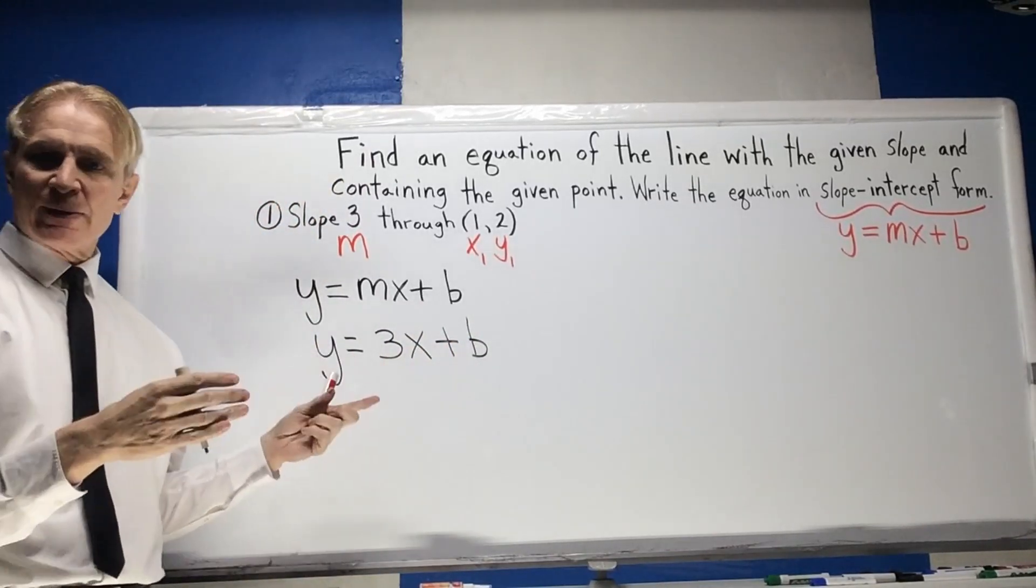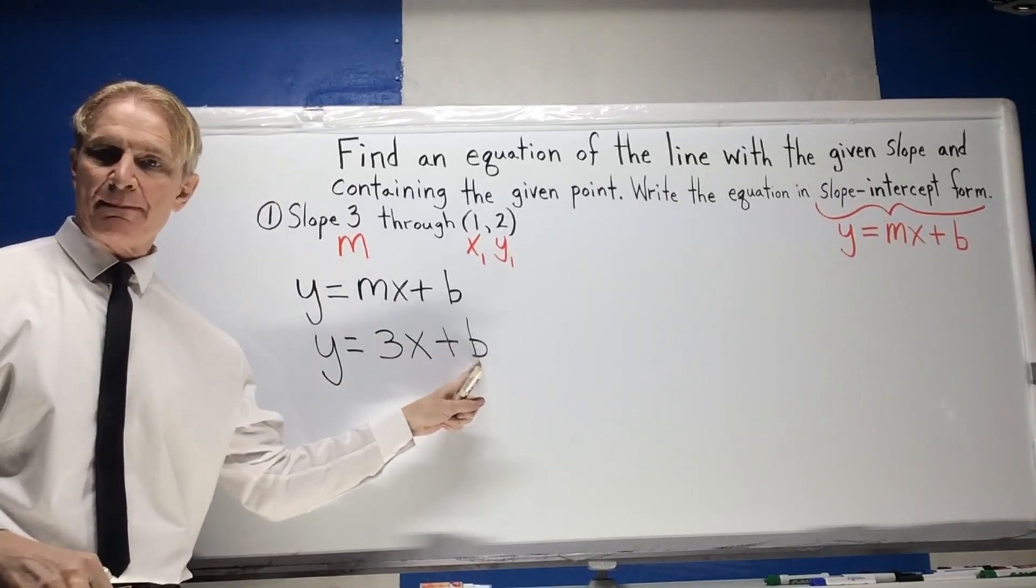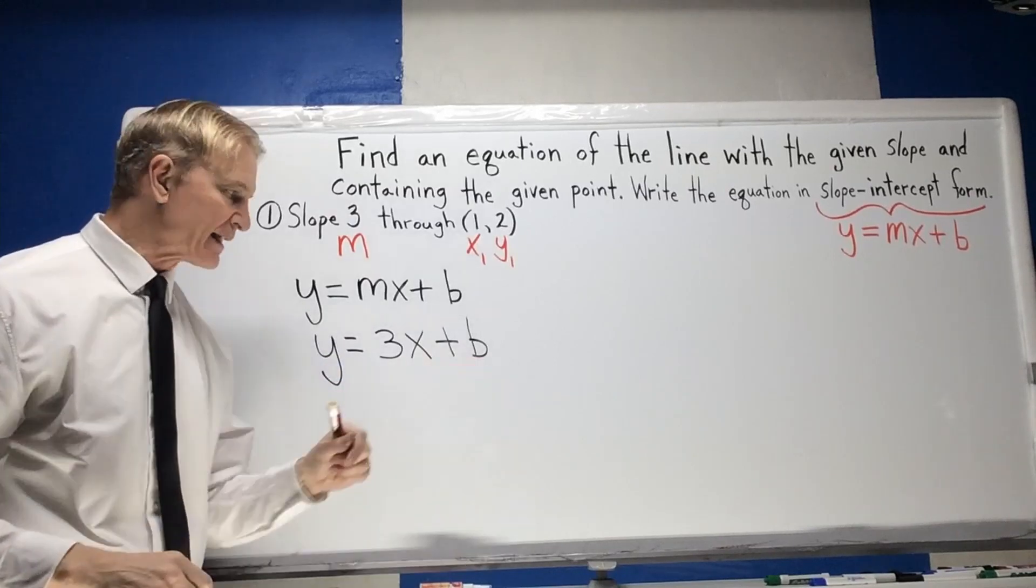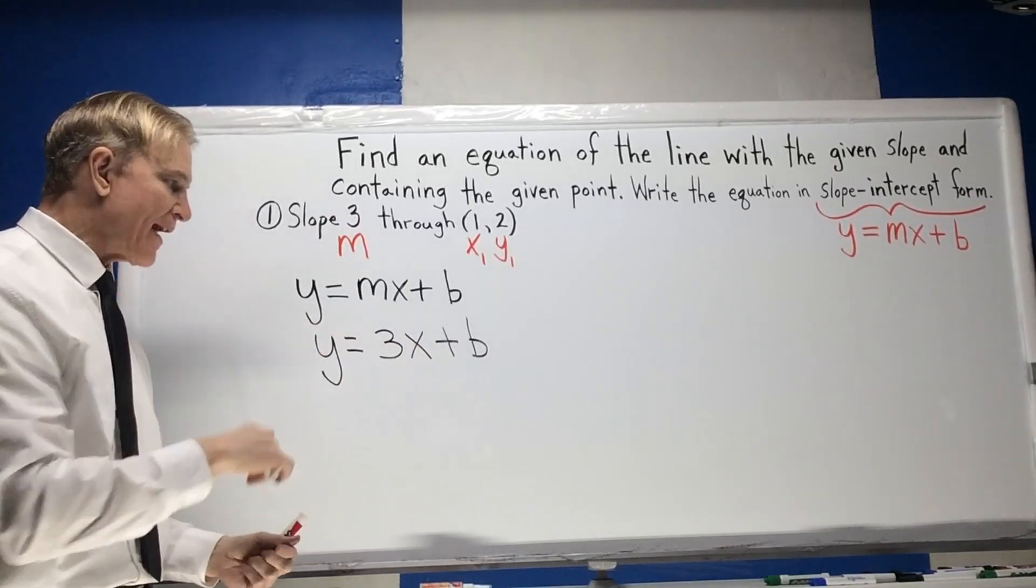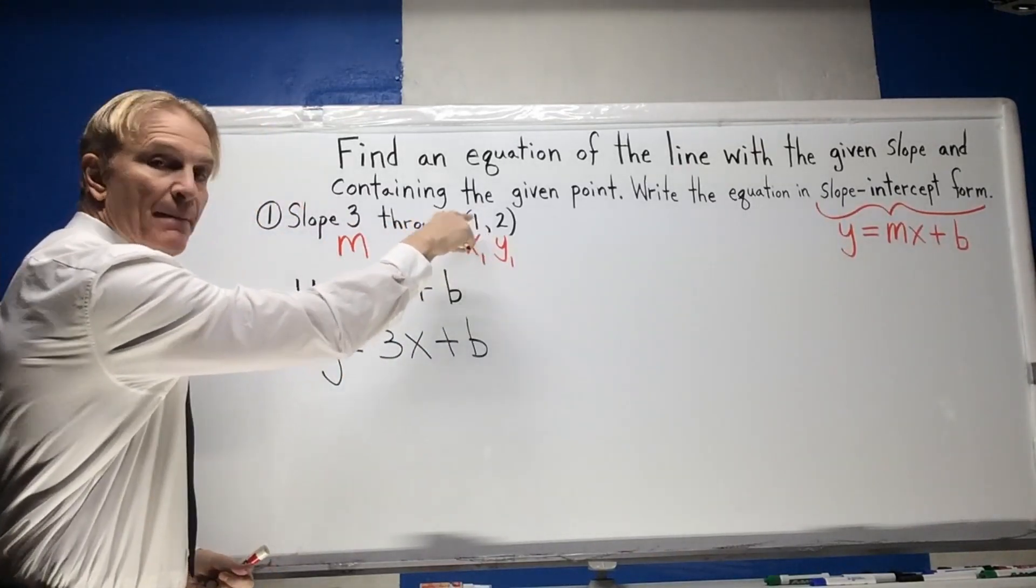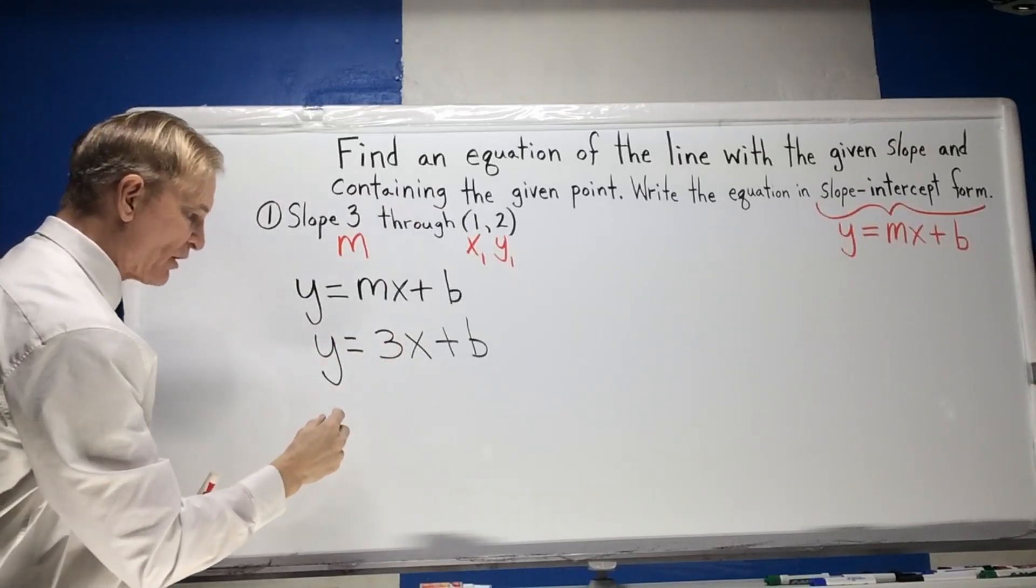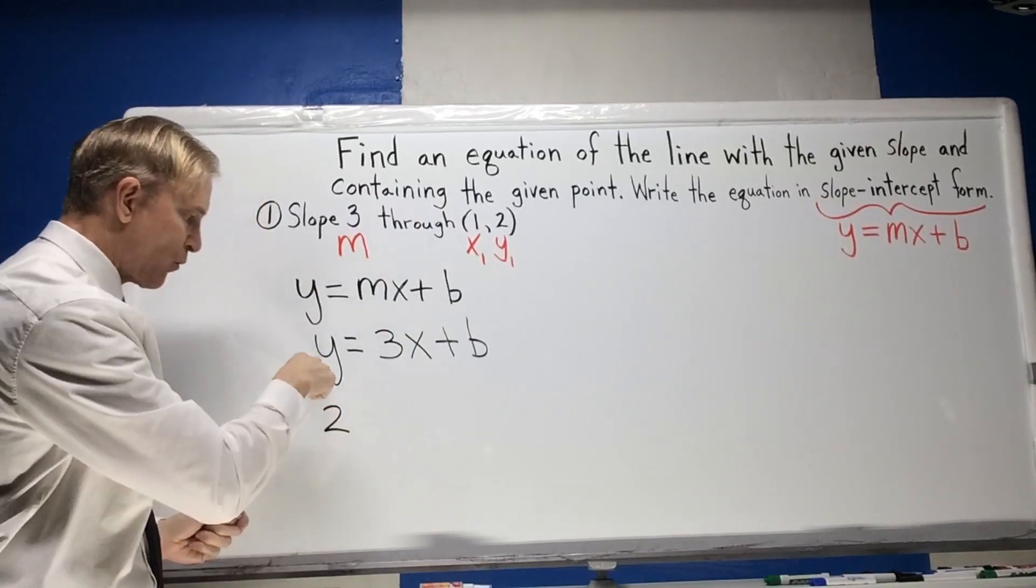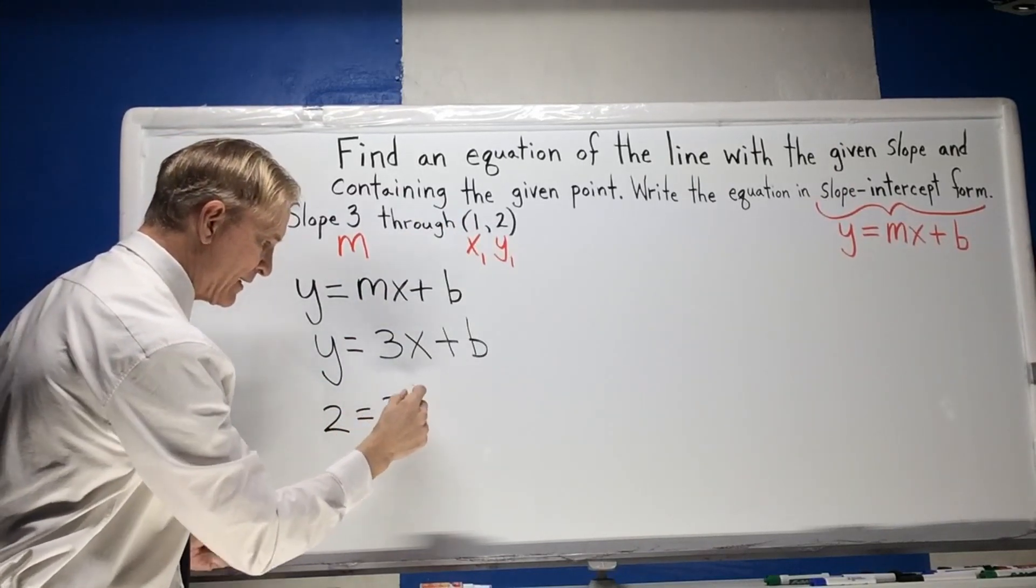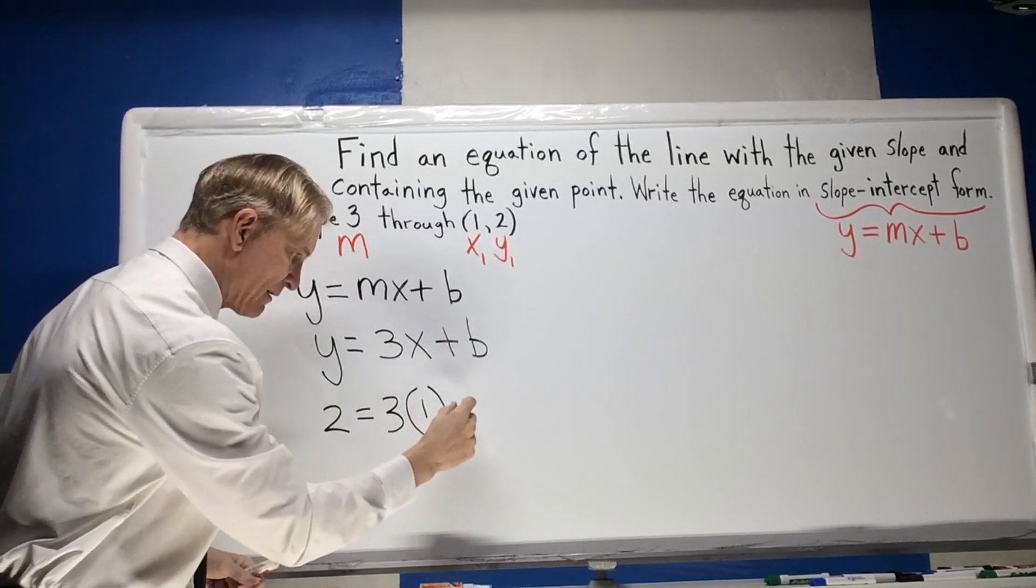So this is what my ultimate answer is going to look like, except for I'm going to have the b part, the y-intercept, or where it bisects, the b where it bisects the y-axis. And how do I find that? Well, I can temporarily plug in my points right here. So instead of general y and general x, I'll make them particular y. Y is now 2 equals 3 times my particular x, which happens to be 1 in this case, plus b.